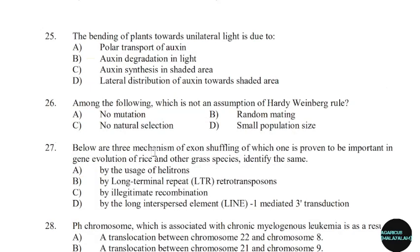25th question: The bending of a plant towards unilateral light is due to. Correct answer: Option D — Lateral distribution of auxin toward the shaded area.